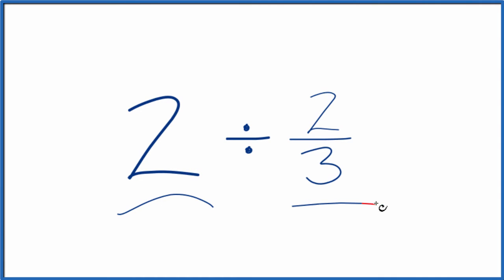Let's divide two by two-thirds, and here's what we'll do. Let's call it two over one. It's still two, just now we have a fraction.